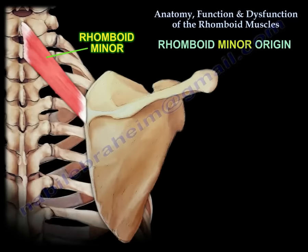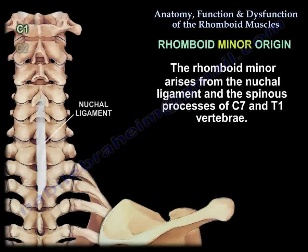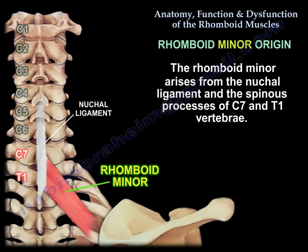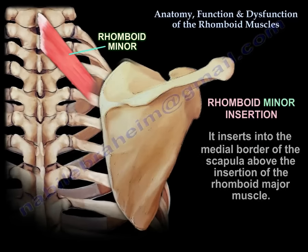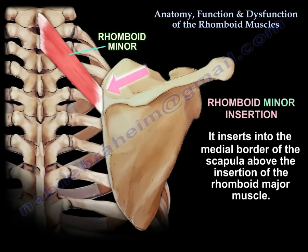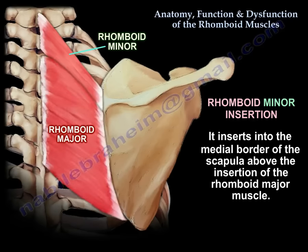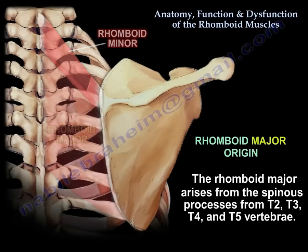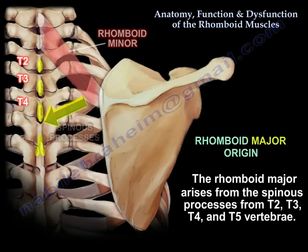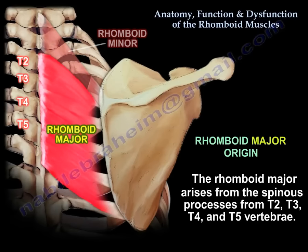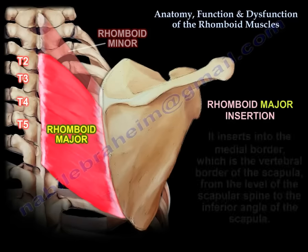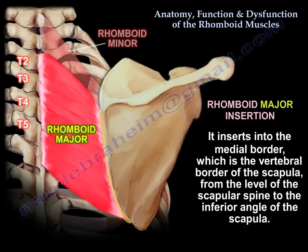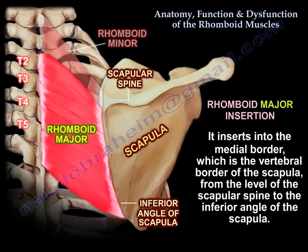The rhomboid minor arises from the nuchal ligament and the spinous processes of C7 and T1 vertebrae. It inserts into the medial border of the scapula above the insertion of the rhomboid major muscle. The rhomboid major arises from the spinous processes of T2, T3, T4, and T5 vertebrae. It inserts into the medial border — the vertebral border — of the scapula, from the level of the scapular spine to the inferior angle of the scapula.